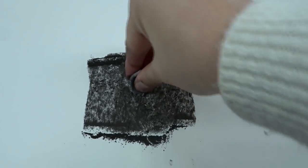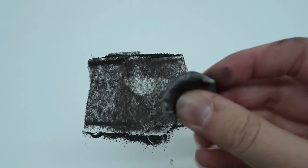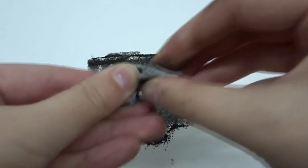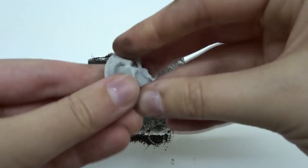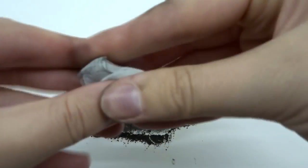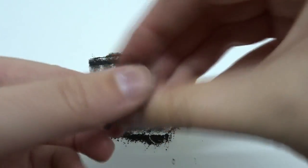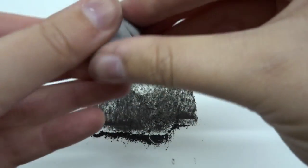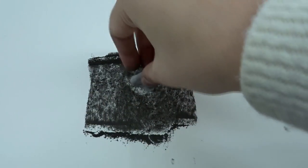So the more you do that, the dirtier it gets. So the way that you clean it is you go back to that pull and fold. And you do that until it's that nice light gray color it was when you first took it out of the package. There you go. Then you just keep going.